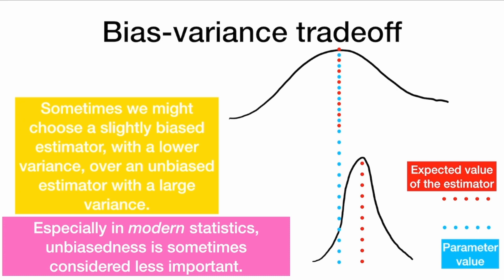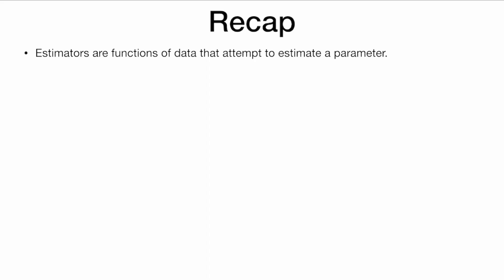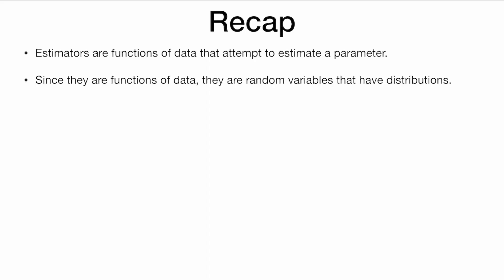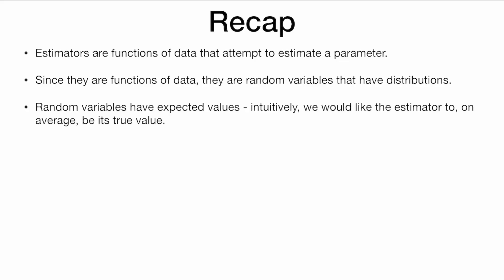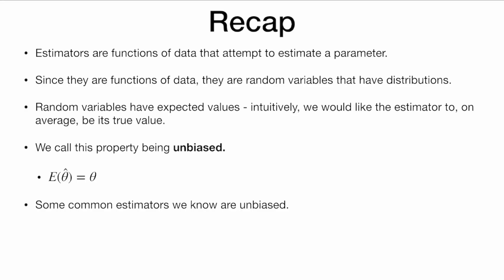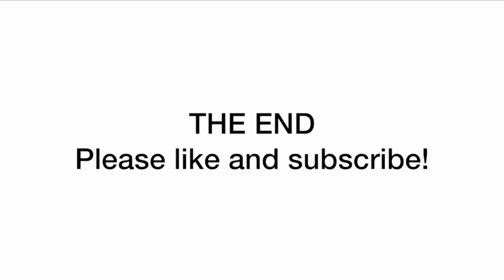Especially in modern statistics, unbiasedness is sometimes considered less important. To recap: estimators are functions of data that attempt to estimate a parameter. Since they are functions of data, they are random variables that have distributions, and random variables have expected values. Intuitively, we would like the estimator to, on average, be its true value — we call this property being unbiased, where the expected value of theta hat is equal to theta. Some common unbiased estimators: x-bar is an unbiased estimator of mu, and the sample proportion is an unbiased estimator of the true population proportion. Thanks for watching — please like and subscribe to learn more statistics.